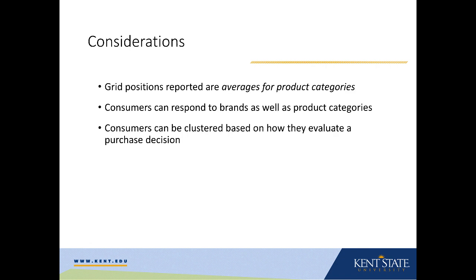Some things to keep in mind: the grid positions reported are averages for product categories. So you may have a product that somebody is very involved with, but other people may not be. Or you may have a category where some people are making a purchase based on feeling motives and others on thinking motives. In fact, we can actually cluster or segment consumers based on level of involvement or primary motives.